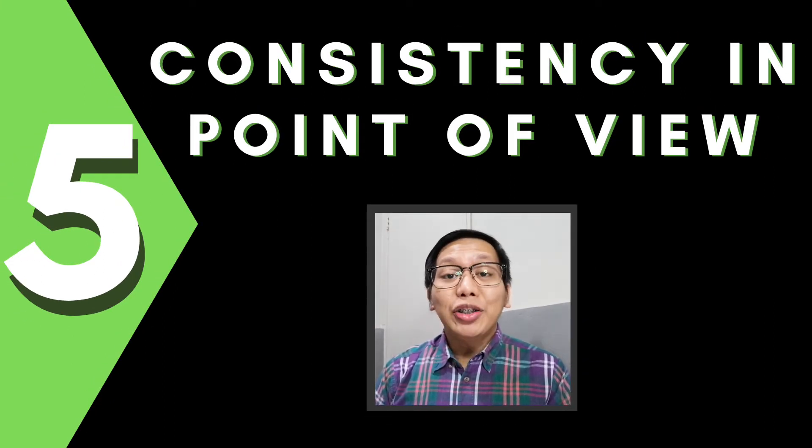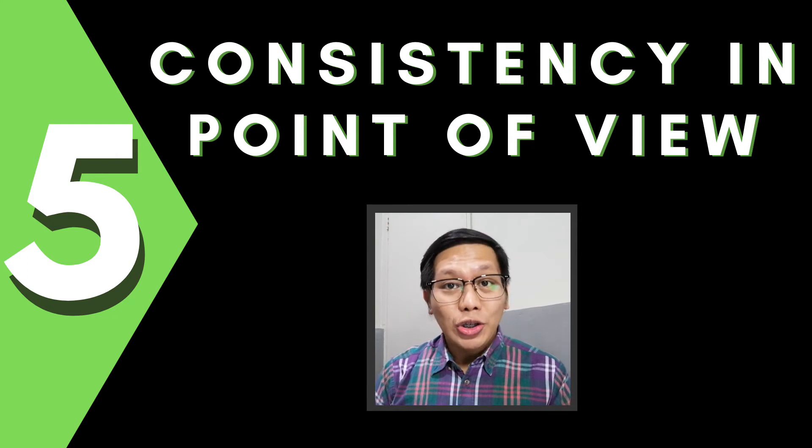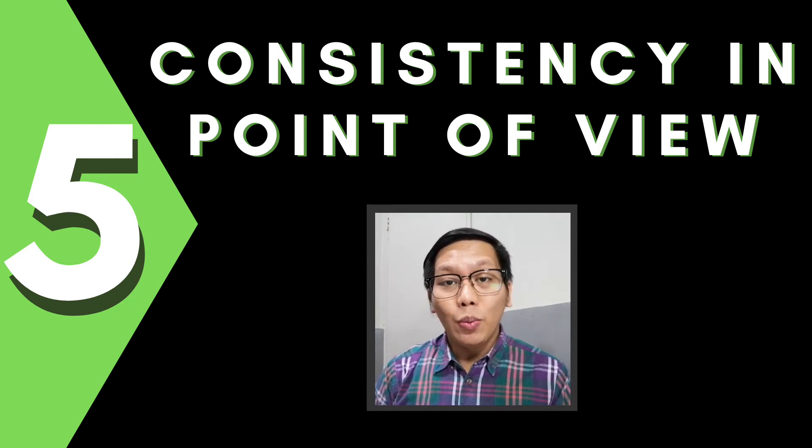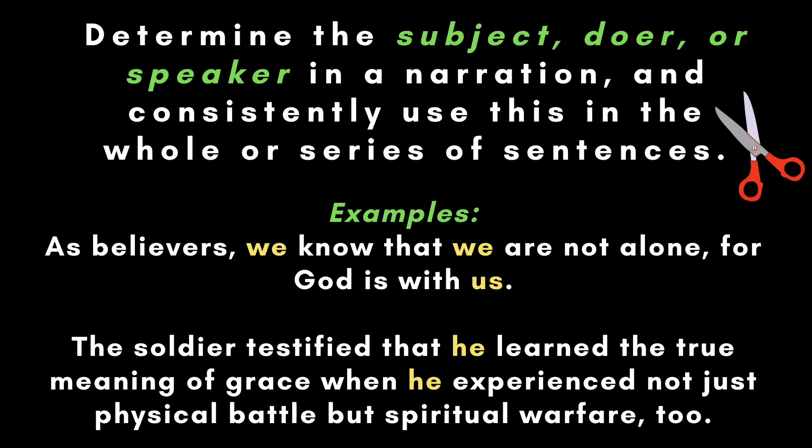As much as a writer needs to be consistent in verb tenses, he or she must also observe consistency when it comes to point of view, a topic that we discussed last week. Always determine the subject, doer, or speaker in a narration, and consistently use this throughout the whole or series of sentences. Here are examples: "As believers, we know that we are not alone, for God is with us. The soldier testified that he learned the true meaning of grace when he experienced not just physical battle, but spiritual warfare too."